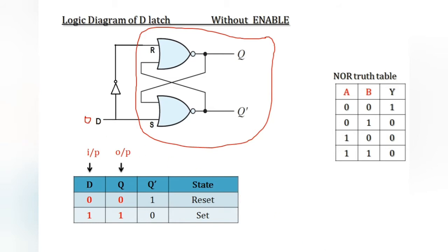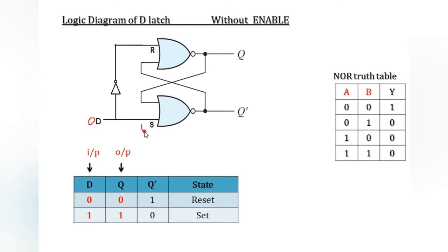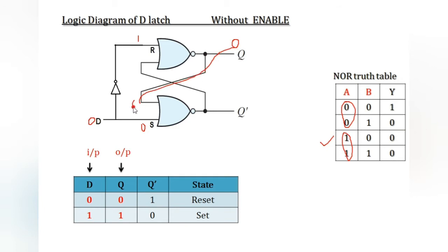Consider the input is zero. Zero goes here. For the NOR gate: if one input is zero and another input is zero, output is one; if another input is one, output is zero. If one input is one, then whatever the second input may be, the output is zero. So zero-zero input to NOR gate results in one.